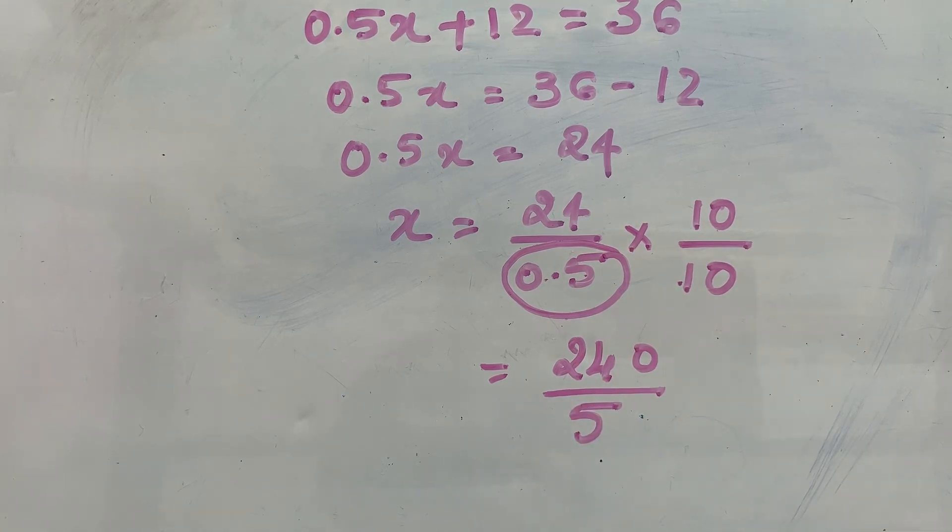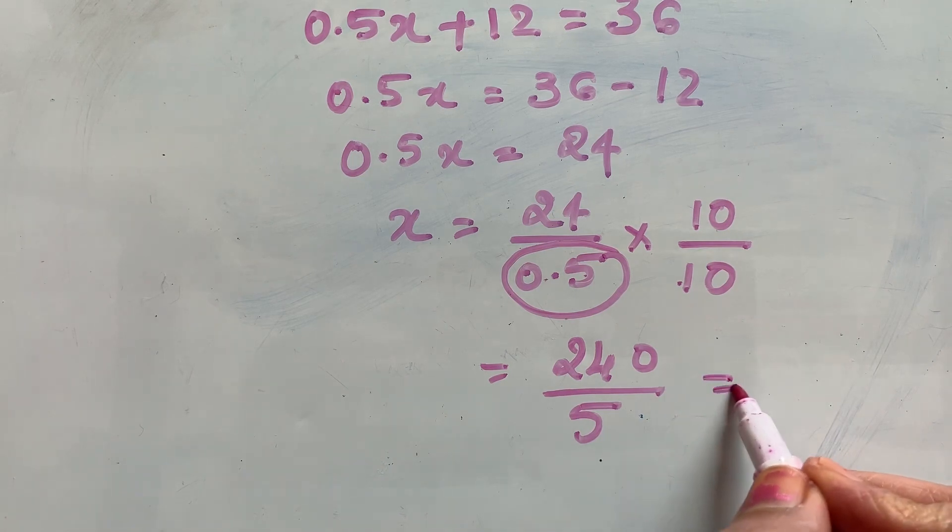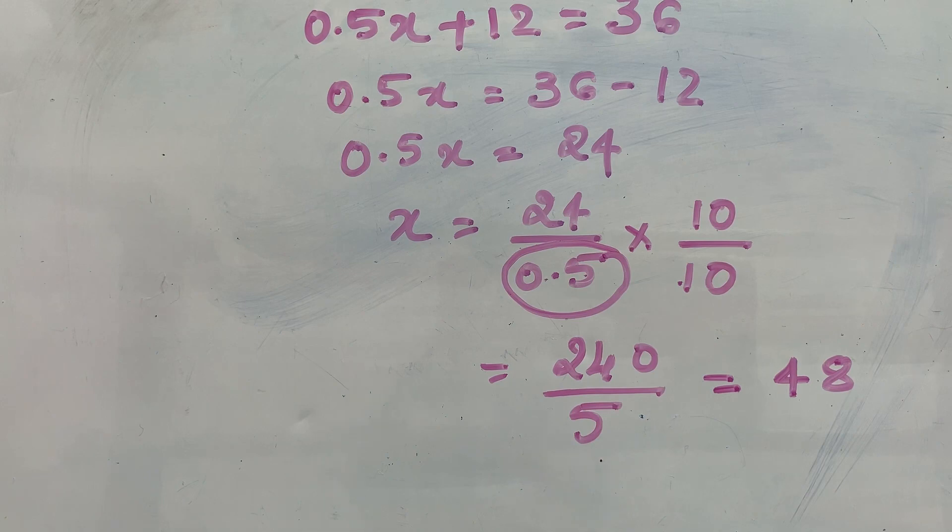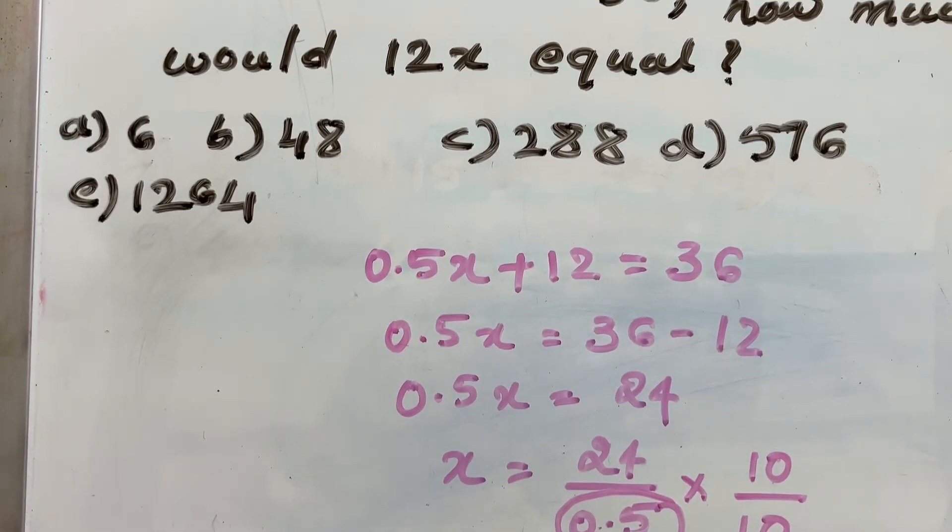So 240 divided by 5 is 5 times 4, 24. 5 times 8, 40. So it's 48. The correct option is option B, 48.